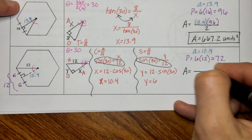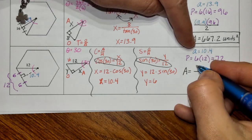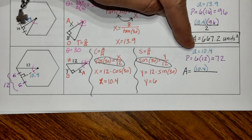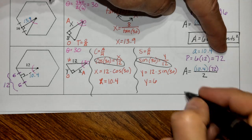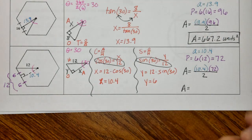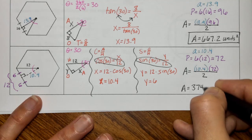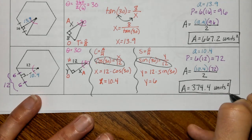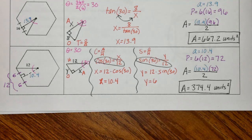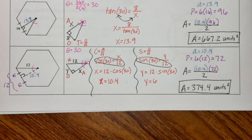Plugging into our area formula: Area equals apothem 10.4 times perimeter 72, divided by 2. We end up with 374.4 units squared. I know it's a lot of work and it can be confusing — please ask your teacher for help or clarifying questions. Go to YouTube and search 'area of regular polygons,' making sure you look at examples that don't just give you the apothem. Hopefully this video has helped.